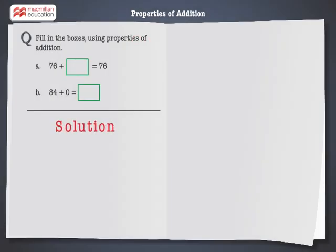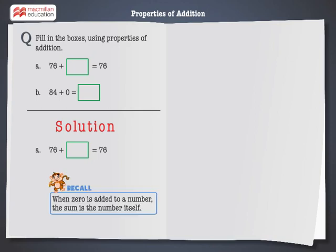Let's solve the first problem: 76 plus dash is equal to 76. When 0 is added to a number, the sum is the number itself. Hence, fill 0 in the box.